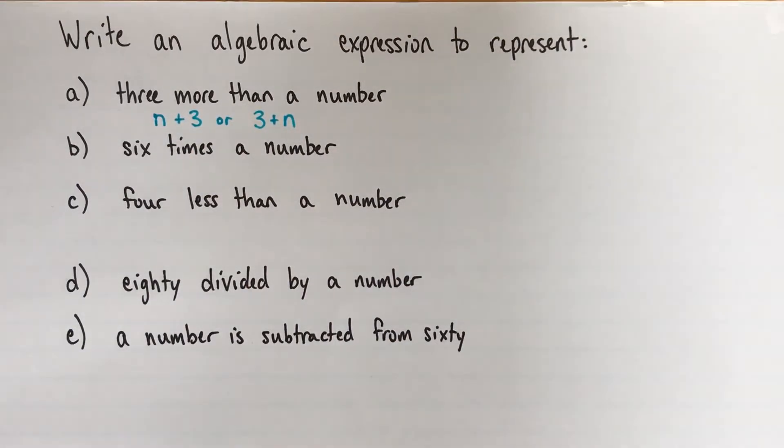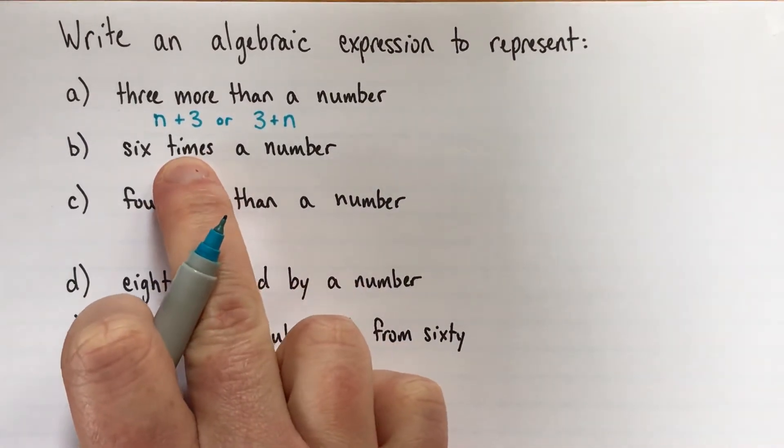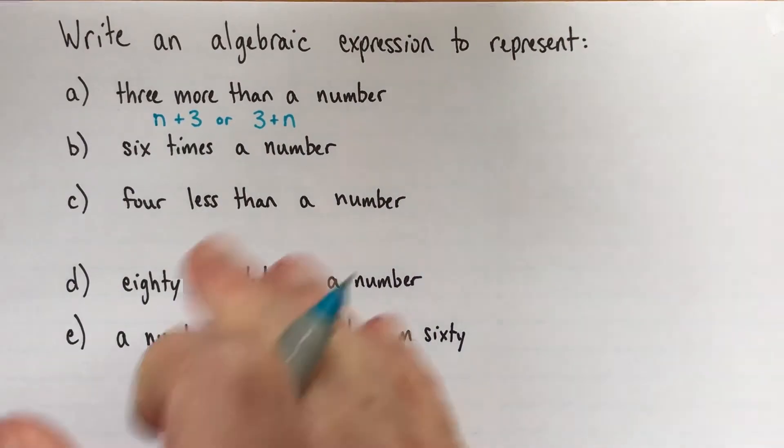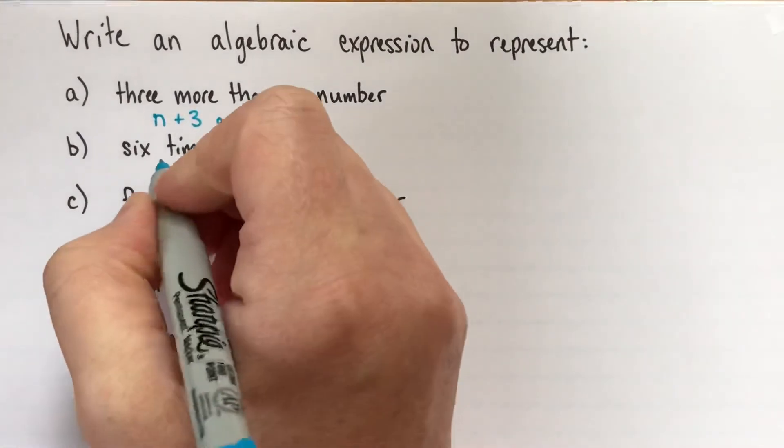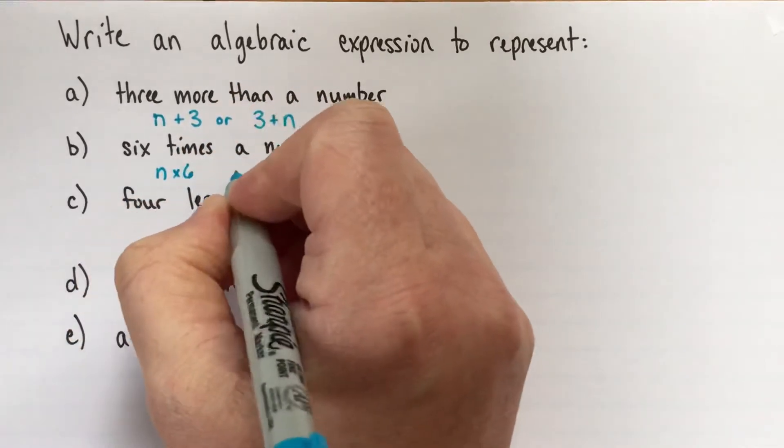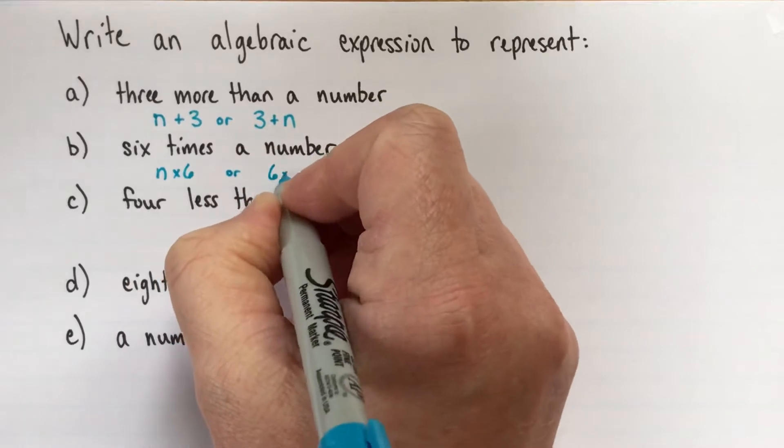Alright, six times the number. This one I think is maybe one of the easier ones because most people, when they see six times, they think of multiplication right away. So six times the number, you could have the number times six.